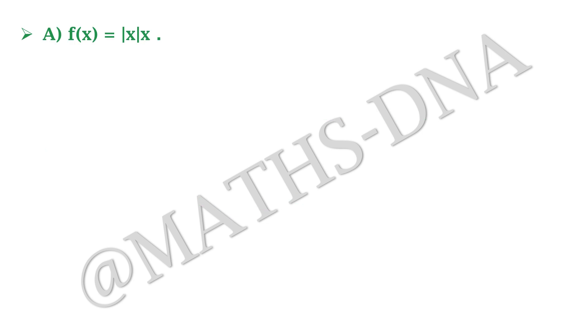Option A says f(x) equals mod x into x. So at x equals 0, f'(0) equals limit x tends to 0 of [f(x) minus f(0)] upon [x minus 0], which is nothing but limit x tends to 0 of [x into mod x minus 0] upon x.